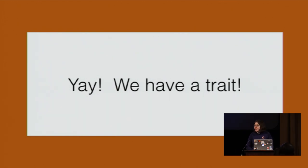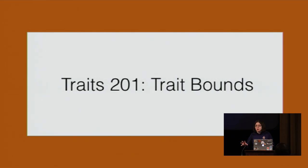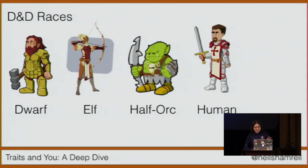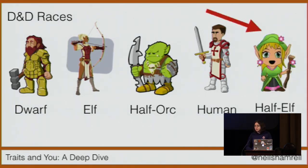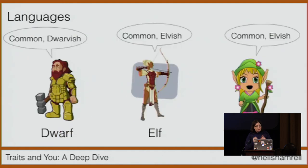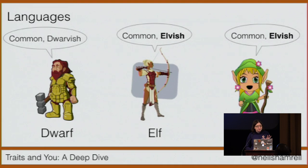That brings us to the end of Traits 101. Let's dive right into Traits 201: trait bounds. We're continuing our Dungeons and Dragons metaphor, and this time I'm going to add another race. We've got our four core races; now let's add in a half-elf. The world of D&D is a pretty diverse world with people of lots of different backgrounds and races, and they need a way to communicate. Part of creating your character is defining how that character can communicate with the outside world.